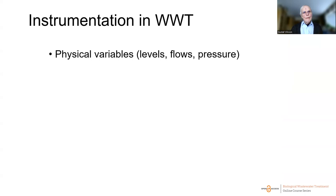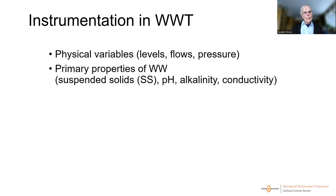Looking at instrumentation for wastewater treatment, there is a whole sequence of different measurements. Physical variables like levels, flows, and pressure are monitored to keep the plant running — they don't directly reflect process behavior, but without them we wouldn't be able to run the plant. We also need to measure primary properties of the wastewater like suspended solids, pH, alkalinity, and conductivity — these are physical-chemical measurements, not measuring biological activity in itself.